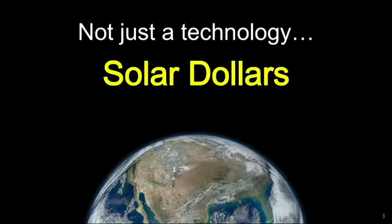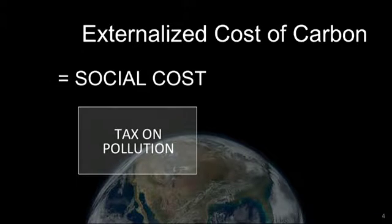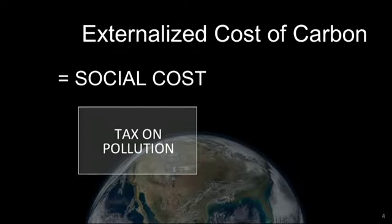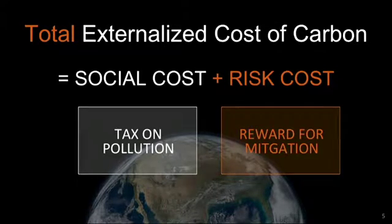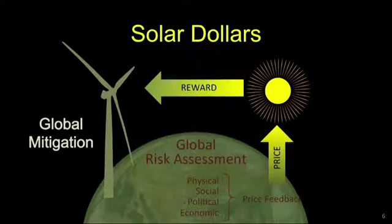This theory was previously hidden by cognitive bias. A standard assumption is that the externalized cost of carbon pollution is equal to the social cost, which should be internalized as a tax. Our team has found that this cost formula is incomplete. Our finding is that a risk cost for barriers to mitigation also needs to be internalized, but with a global reward. This solution resolves many limitations of standard policies.